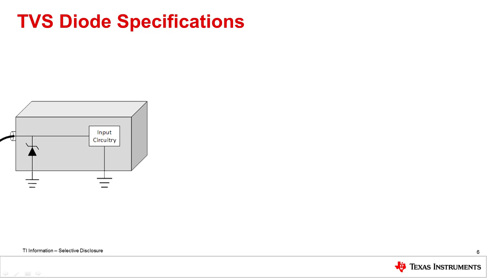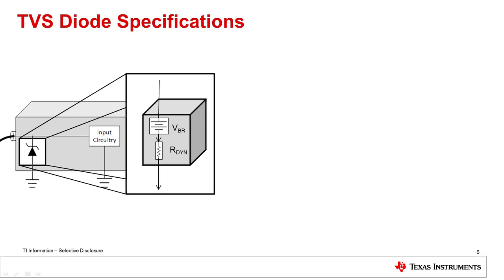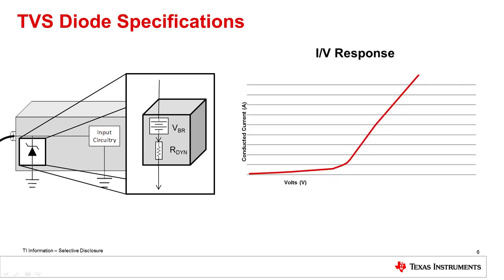The second important limitation is the TVS clamping voltage. Non-ideal diodes can be modeled as a dynamic resistance, or R-dyne, in series with a breakdown voltage, or VBR. This means that when current flows through the TVS, the measured voltage can rise significantly above the diode breakdown voltage. This voltage is determined by R-dyne and is called V-clamp.